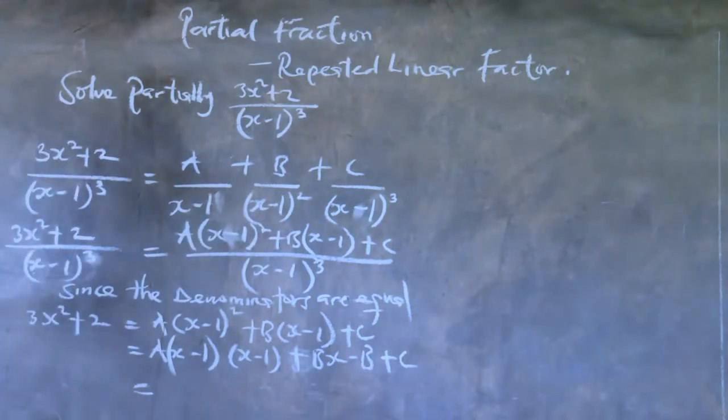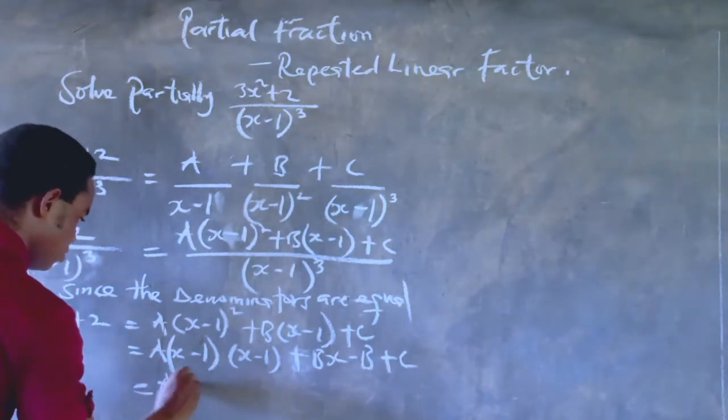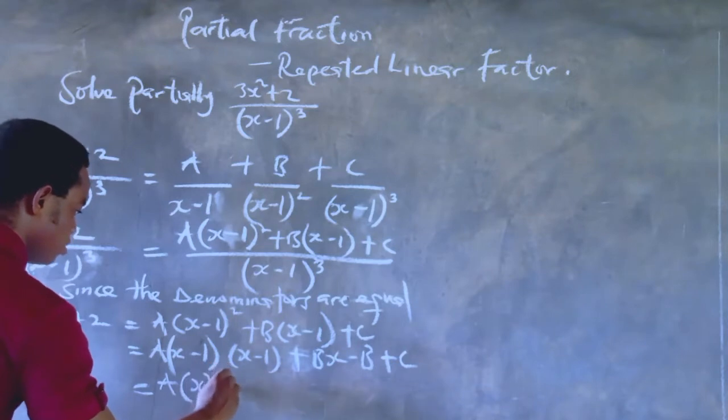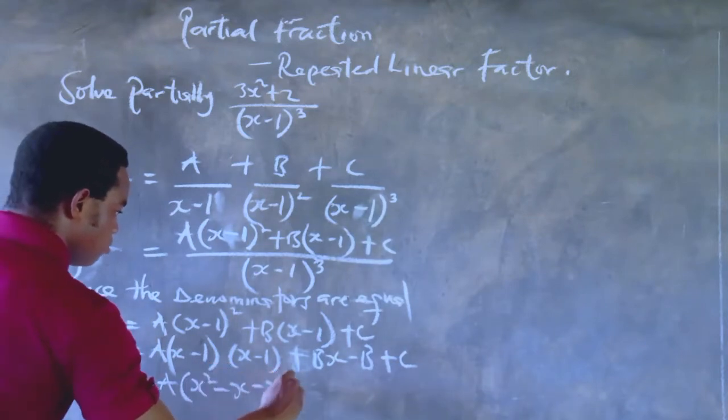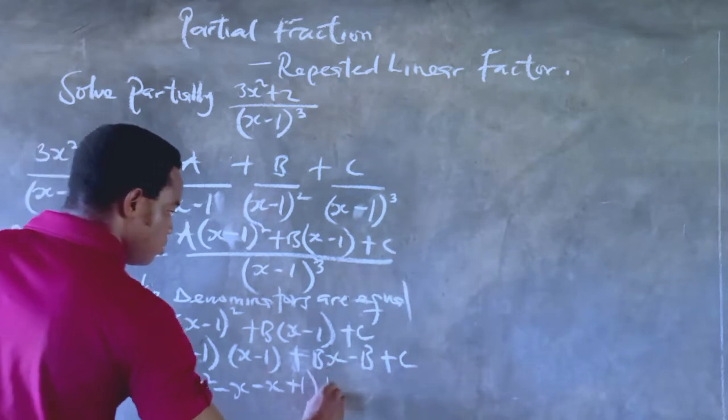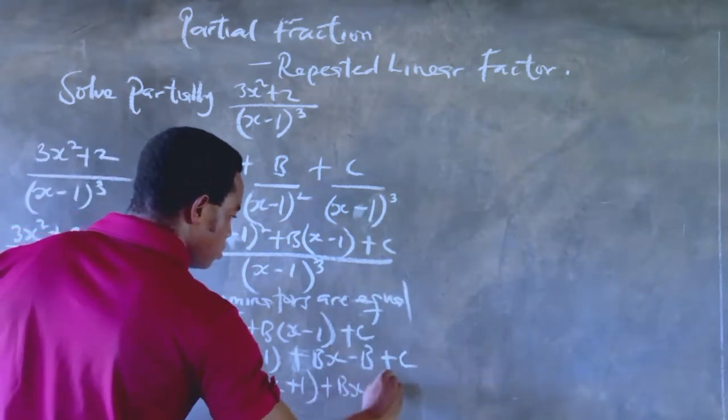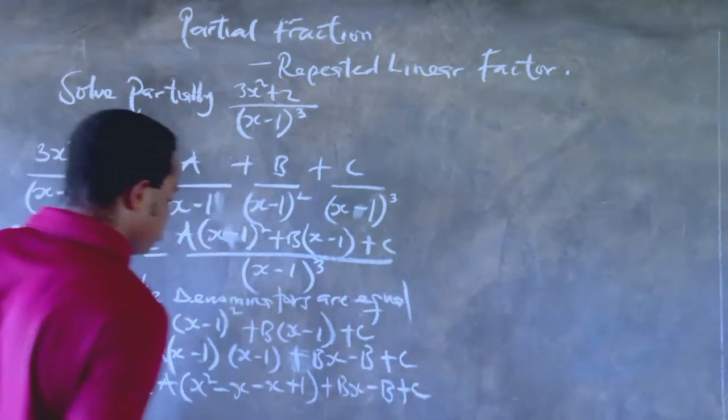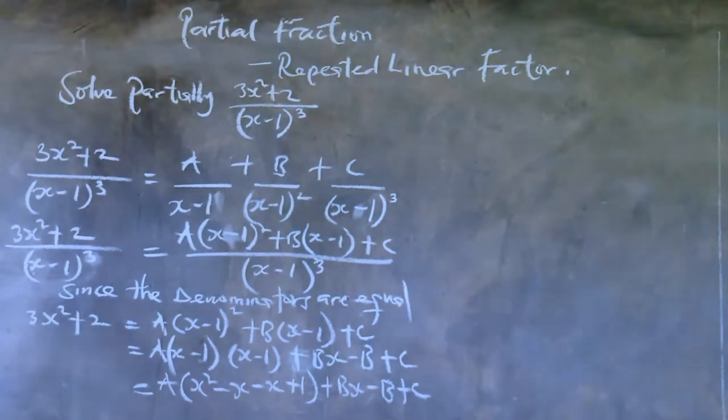We have A into (x minus 1) and (x minus 1) plus Bx and minus B and plus C. So that would be A into, if you open those two brackets, A into (x squared minus 2x plus 1) and plus Bx minus B and plus C. So on this side we still have 3x squared and plus 2.